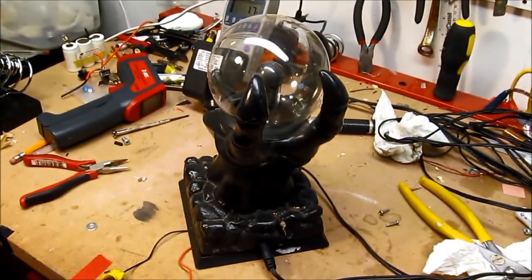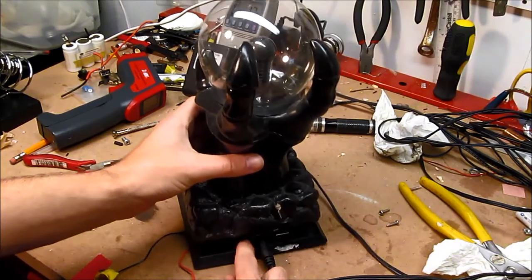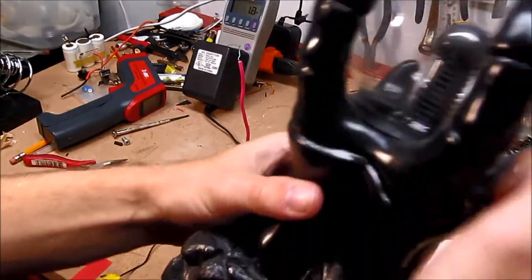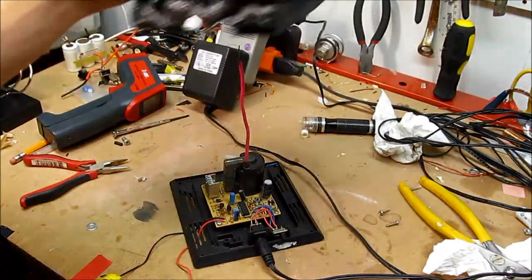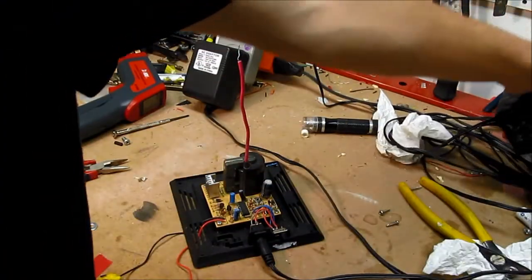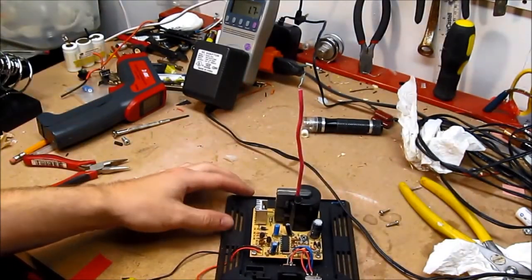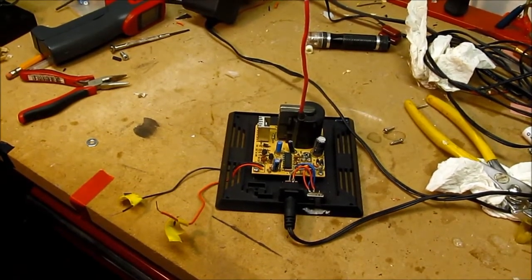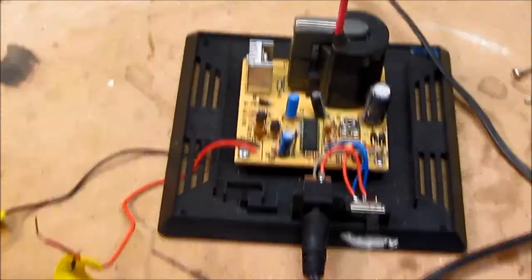I've already undone the screws, so the globe part and the housing just pulls right off. You can put that aside for now, and that is the circuit board in there. Takes a 12-volt AC input, it's got a little switch and some components. Let's see if I can get this zoomed in, pointed the right direction, and focused.